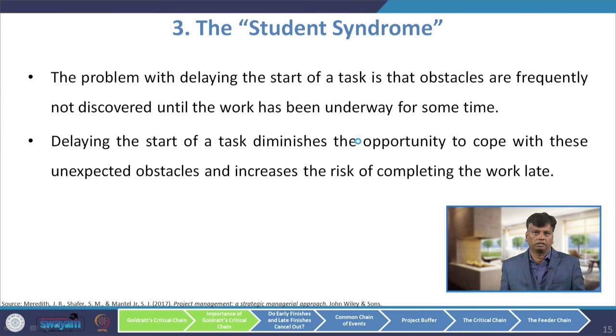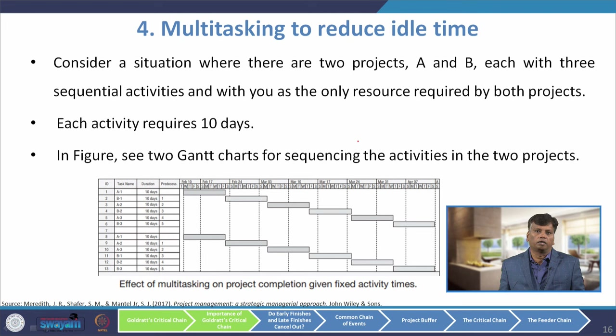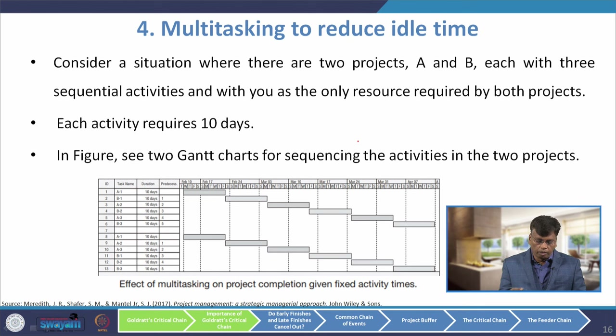The fourth point is multitasking to reduce idle time. People may think multitasking reduces idle time, but it will delay other activities and the overall project duration. Consider a situation where there are two projects A and B with three sequential activities each, with you as the only required resource. Each activity takes 10 days. You can see two Gantt charts for sequencing the activities in both projects.